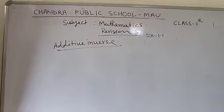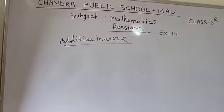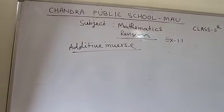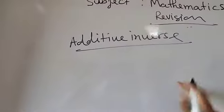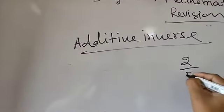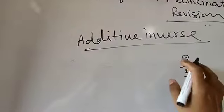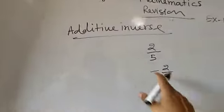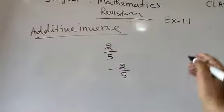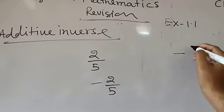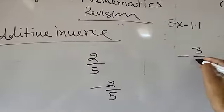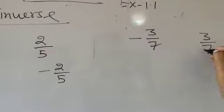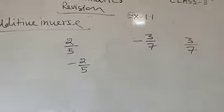I am going to explain about the additive inverse. The additive inverse of any number will be the negative of that number. For example, if I am going to ask what is the additive inverse of 2 by 5, the additive inverse of 2 by 5 will be minus 2 by 5 — only you need to change the sign. If I am going to ask what is the additive inverse of minus 3 by 7, if it is negative, its additive inverse will be positive — that will be plus 3 by 7.